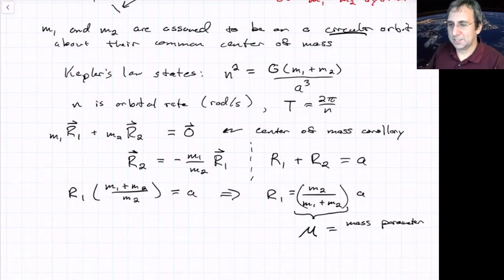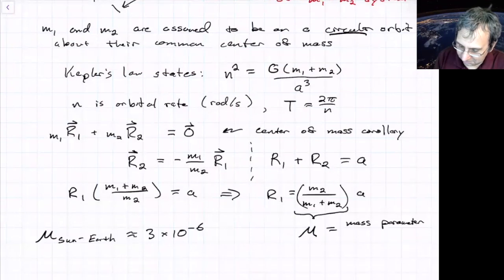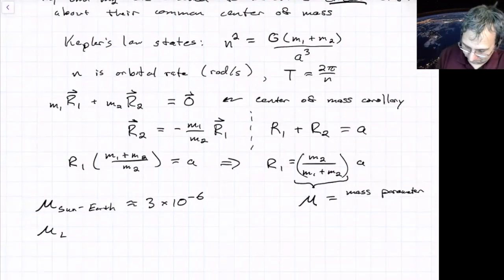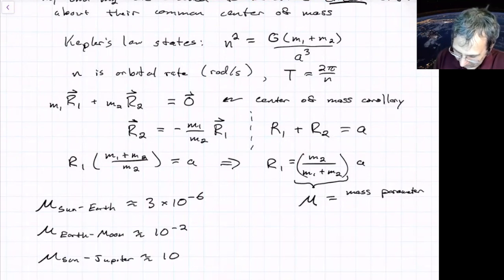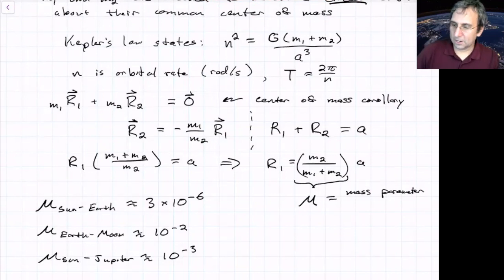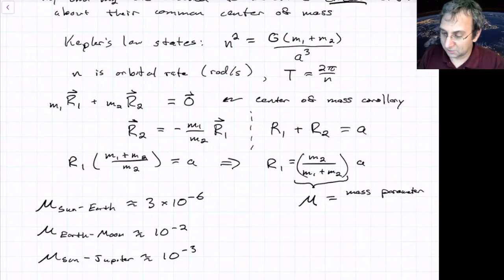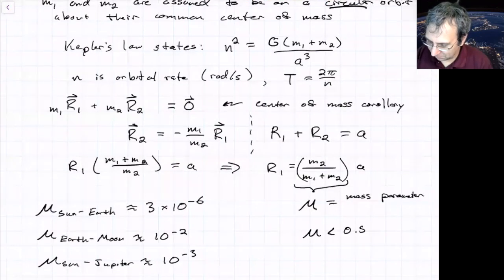In the solar system, the mass parameter tends to be pretty small. The mass parameter for the Sun-Earth system is about 3×10⁻⁶. In the Earth-Moon system it's closer to 10⁻². Jupiter gives a mass parameter of about 10⁻³, while smaller planets like Mars are around 10⁻⁷. There are different phenomena that can occur, and the speeds of low-energy trajectories depend a lot on this mass parameter. We assume mu is less than 0.5 and greater than zero.